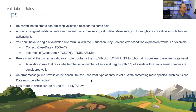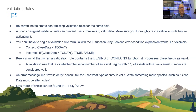Tips: be careful not to create contradictory validation rules on the same field — you might pass one rule but fail another, making it impossible to save. Always test validation rules in a sandbox before production, since it's very easy to get them wrong. A poorly designed validation rule can prevent users from saving valid data.